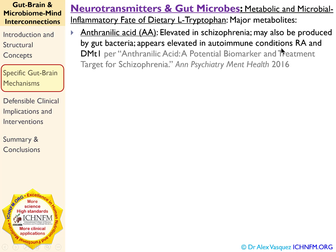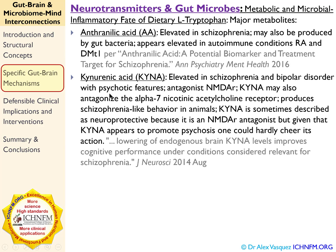When we talk about the kynurenine pathway, we are mostly concerned with these three metabolites. Tryptophan gets converted into kynurenine, and kynurenine gets converted into anthranilic acid — again elevated in schizophrenia and autism — and then that feeds back into the kynurenine pathway, as I'll show you in just a minute.